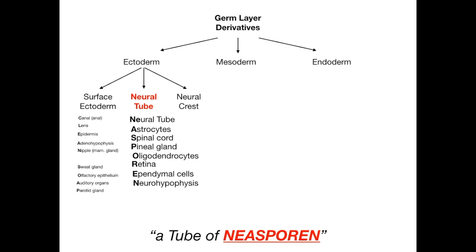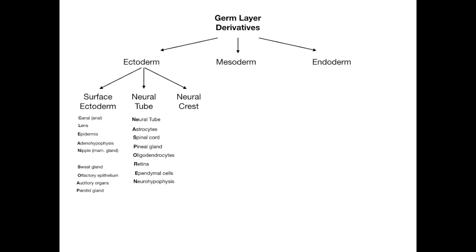There's a lot of memorization involved in understanding what parts go with each letter, but this simplifies it beyond anything in First Aid or question banks — there's really no good mnemonic for this out there. So hopefully this is something useful. I'm going to shrink the text here so we can fit it all on the screen, and let's wrap up the ectoderm by talking about what comes from the neural crest.